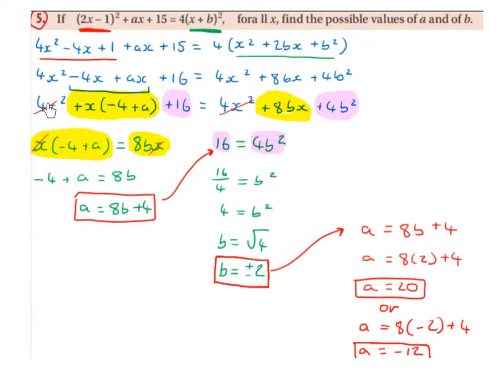So then we have 4x squared on the left of the equal sign and 4x squared on the right of the equal sign. We can just cancel those out.